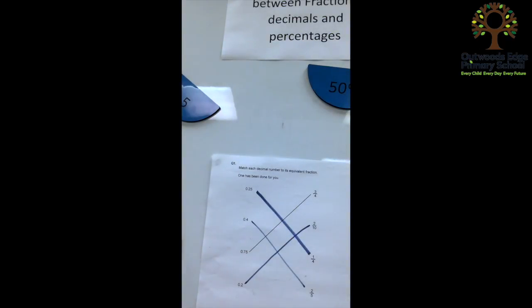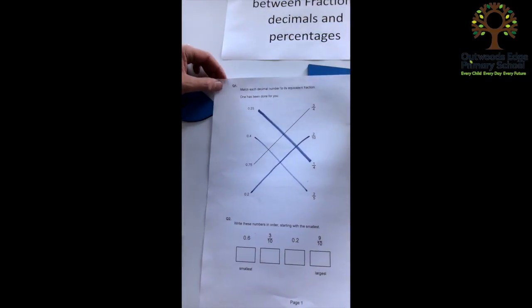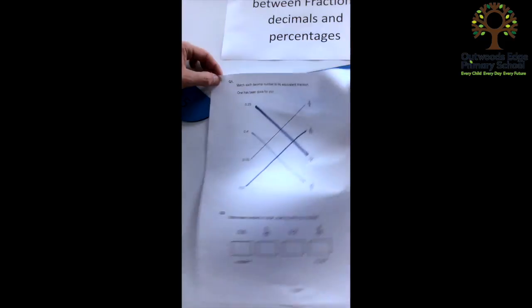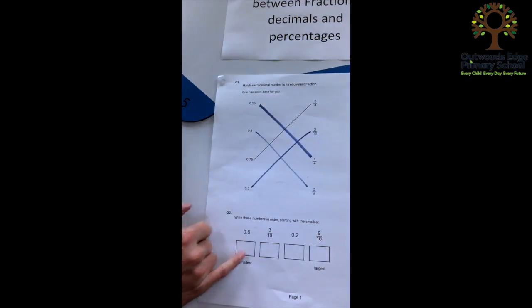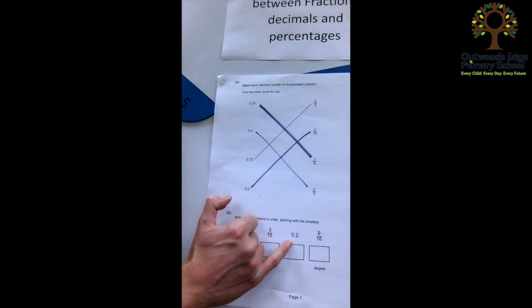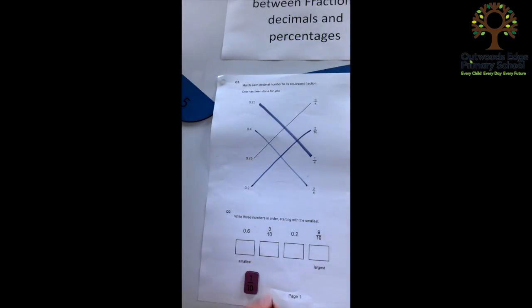Finally, the problem below that is a problem where the children need to order a mixture of fractions and decimal numbers. So we've got 0.6, 3 tenths, 0.2, 9 tenths. Now, to help them out with this one, it's really helpful if the children convert them all to either fractions or decimals. So I'm going to use a different shape card now. I'm going to use these rectangular ones.